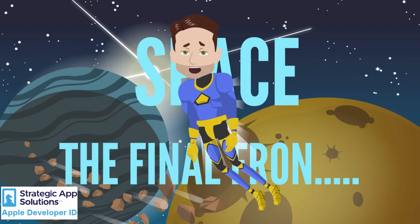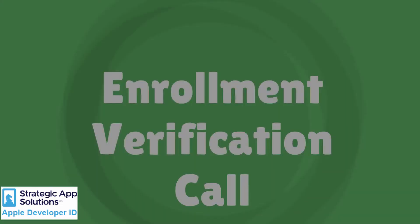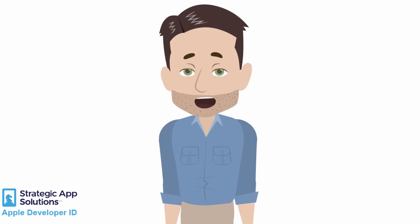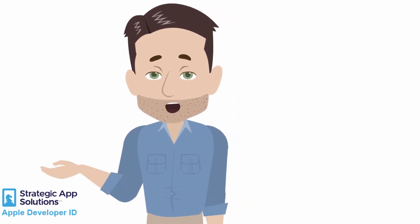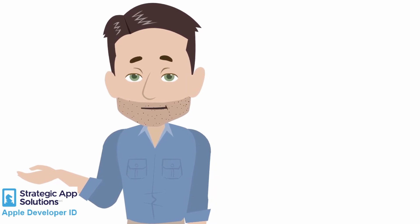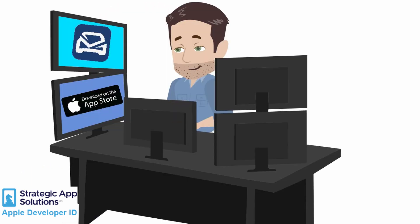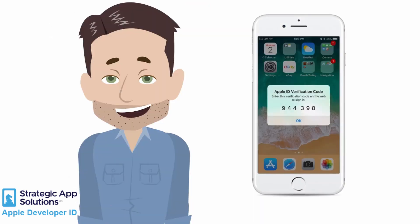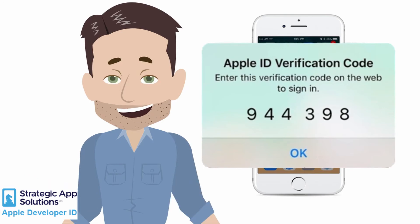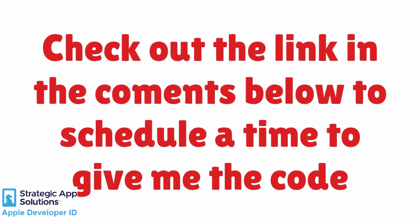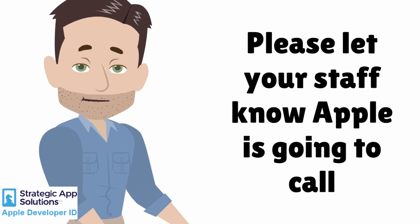Now the good news here is we're going to do this next section together. Step 3: Enrollment Verification Call. When I create your Apple Developer ID, it's going to prompt us for two-factor authentication we just established during the last step. Your job here is very easy. At a scheduled time, I'm going to start the enrollment process and in doing so, I'm going to ask Apple to send you another six-digit code. I need you to give me that code. The code expires after a short period of time, so we need to make sure we coordinate our schedules. You can find a link in the comments below to schedule a time to provide me that code.